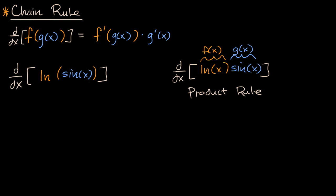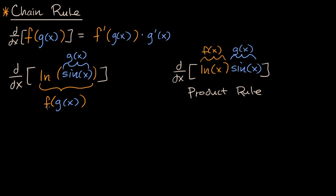Here you have f(g(x)), not f(x) times g(x). Our g(x) equals sine of x, and then f(g(x)) is the natural log of sine of x. If someone asked you just what f(x) was, that would be natural log of x. But f(g(x)) is the natural log of our g(x) — so that's the key first thing.